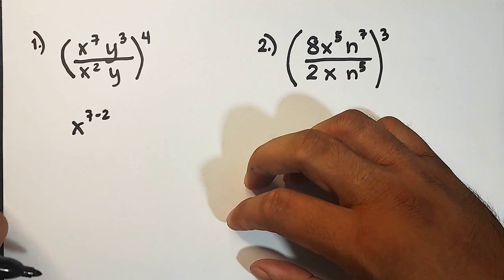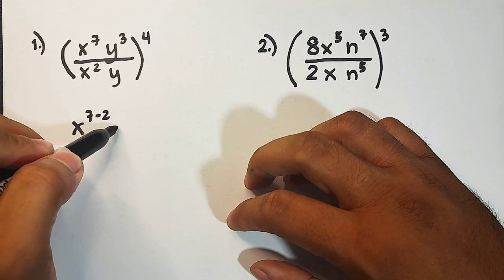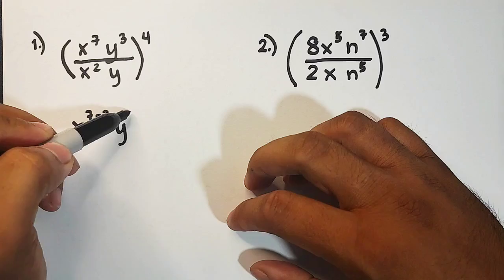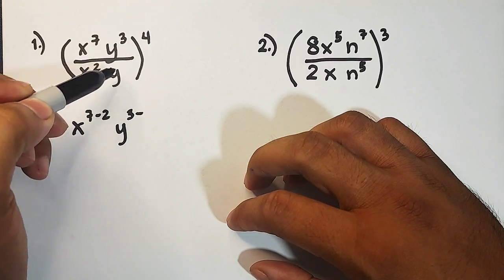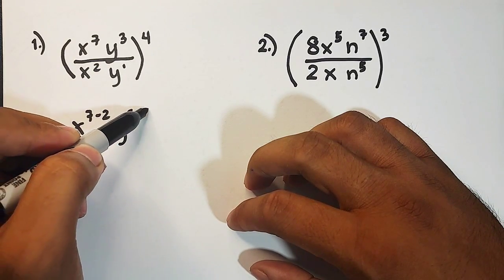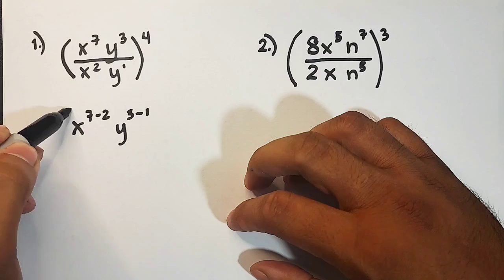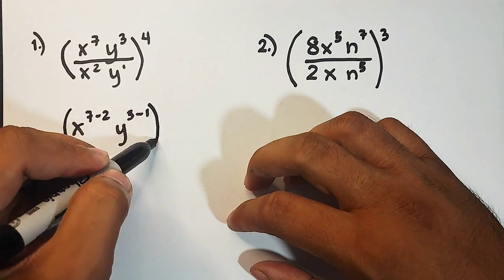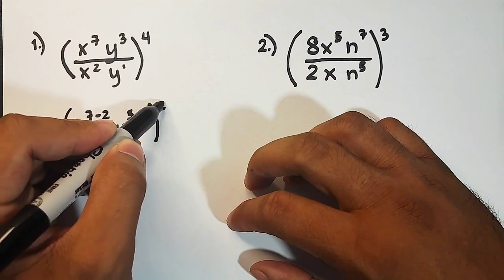Next, for the variable y, copy the variable y then subtract exponent. We have 3 minus, we have your invisible one, so 3 minus 1.